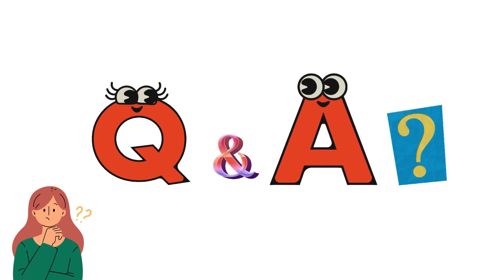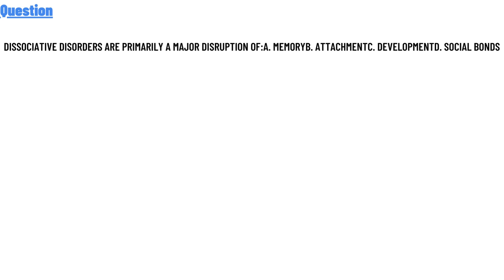Our today's question is: Dissociative disorders are primarily a major disruption of — option A: memory, option B: attachment, option C: development, option D: social bonds. The correct answer is option A: memory.